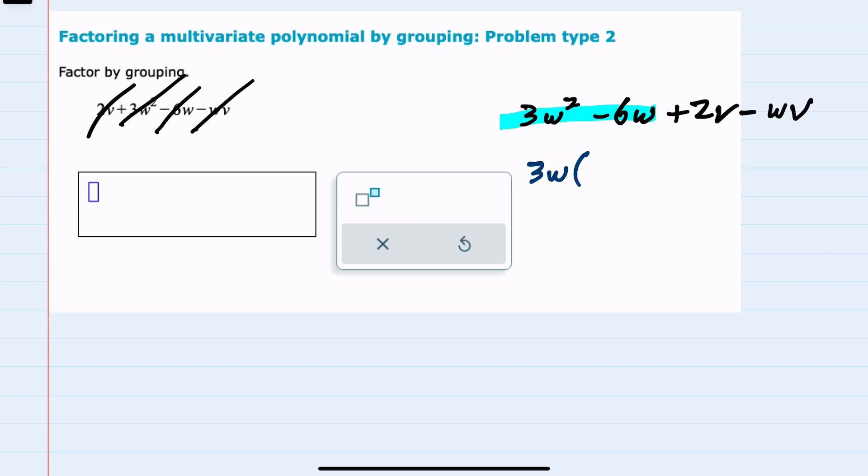From the first term, the 3w², if I factored out a 3 and a w, I would just be left with w. From the second term, if I factored out a 3w, I would be left with a minus 2.